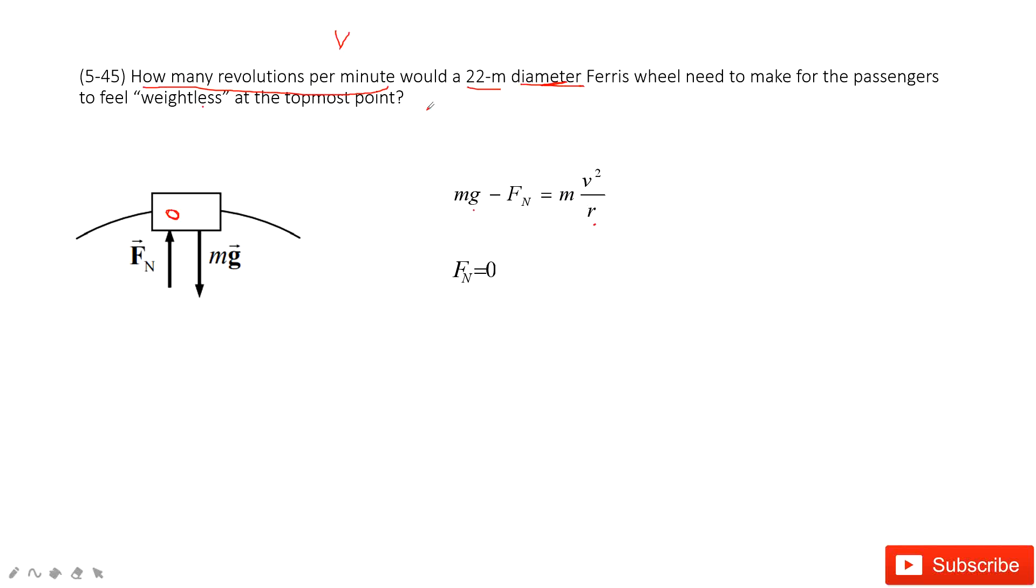We know velocity. How can we convert it to revolutions per minute? Very simple. We can consider for one revolution, it is just 2πr. For one revolution, the distance is 2πr.